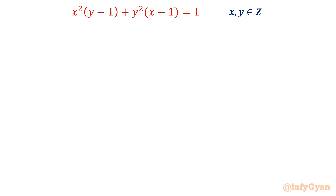Hello everyone, welcome to InfiKyaan. In this very exciting video of number theory challenge, we are going to take up today's Polish Math Olympiad problem. The problem is: x² (y − 1) + y² (x − 1) = 1. We have to find all integer solutions (x, y). So let's get started.